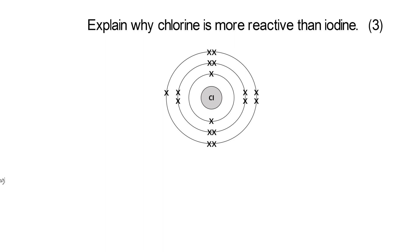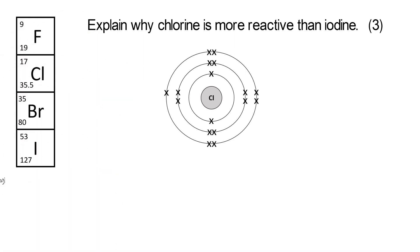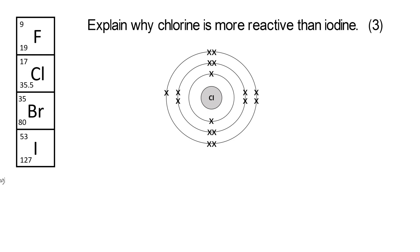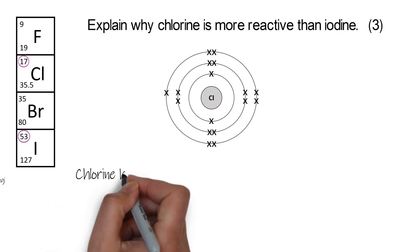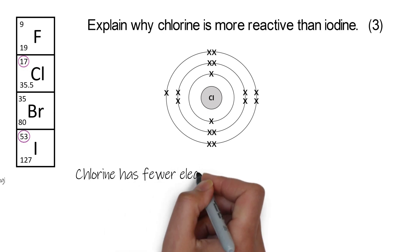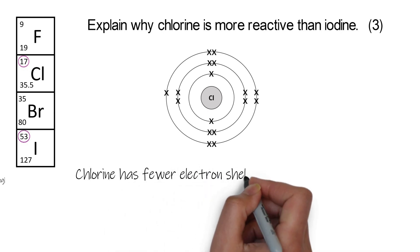I'm not going to show you the structure of iodine because the way we draw our atoms — two electrons in the centre shell, then eight, then eight — it doesn't work for iodine. But we can tell from our periodic table that chlorine has 17 electrons, and that's the small number there. That's because it has 17 protons, so it also has 17 electrons. Whereas iodine's got 53 protons, so 53 electrons. If it's got that many more electrons than chlorine, it's going to have more shells to put them in. So chlorine has fewer electron shells than iodine.